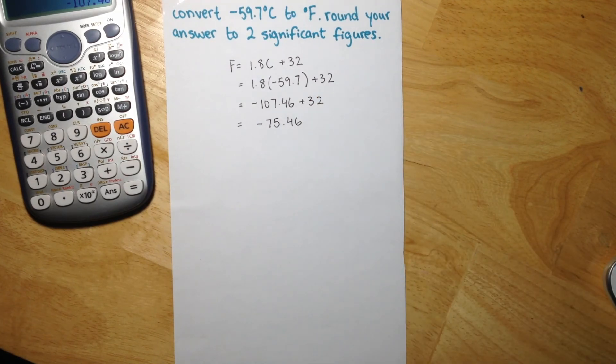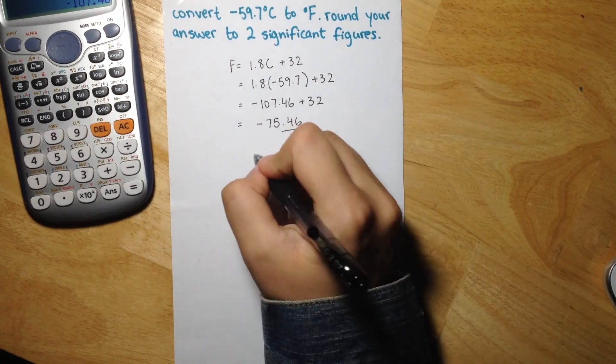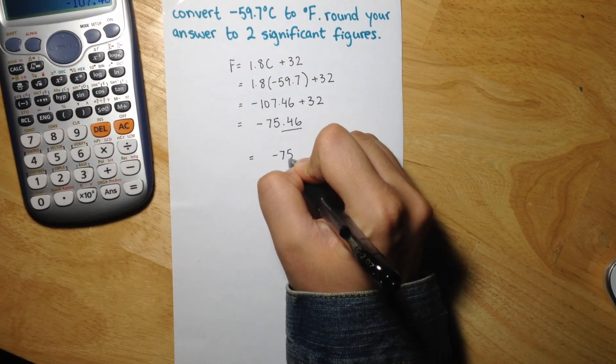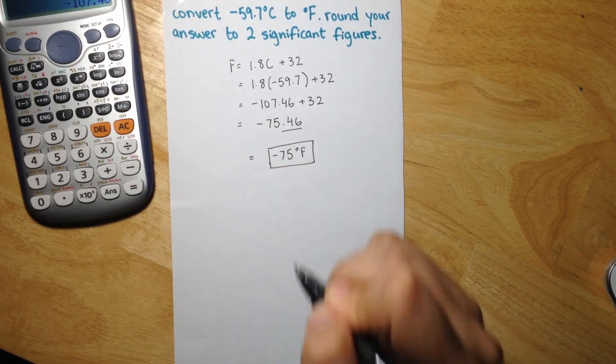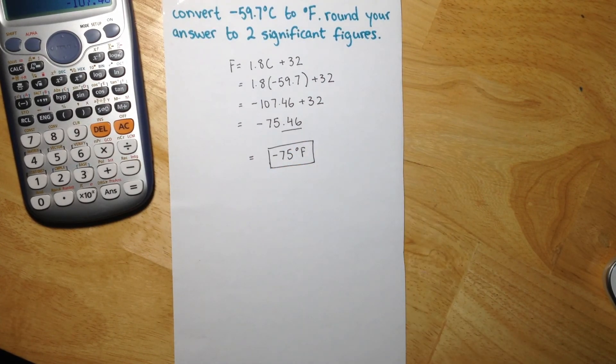And since we're rounding to two significant figures, we would just take these decimals off and our final answer would be negative 75 degrees Fahrenheit.